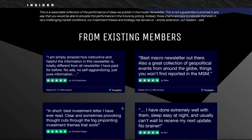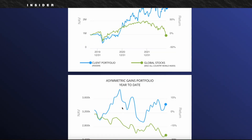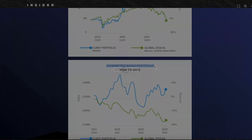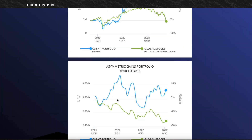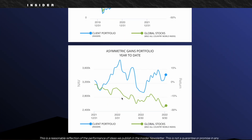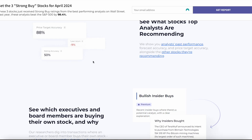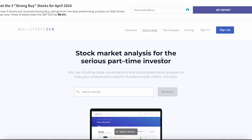The number one thing is their focus on asymmetric opportunities. They have an asymmetric gains portfolio, and year-to-date you can see it's always beating the market and global stocks overall by a significant margin. Their newsletter emphasizes identifying opportunities with significant upside potential that can lead to substantial returns while keeping risk quite low. It's asymmetric because the reward is potentially much higher than the risk, so this focus could be way more rewarding than traditional stock picks found on Wall Street Zen.